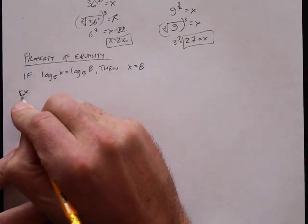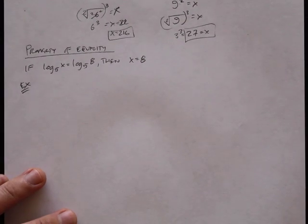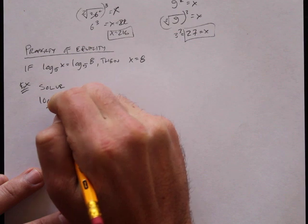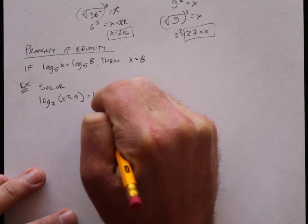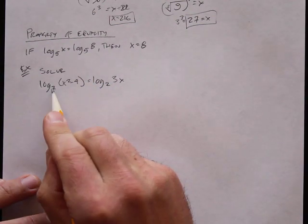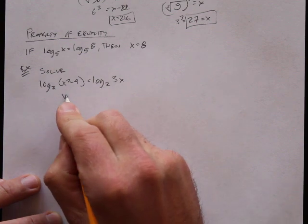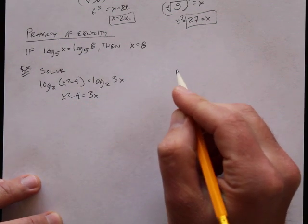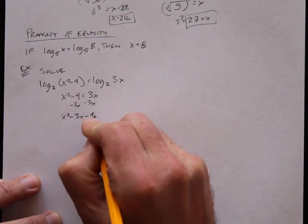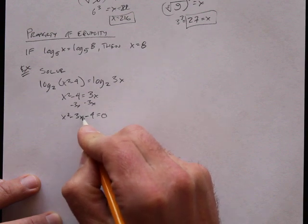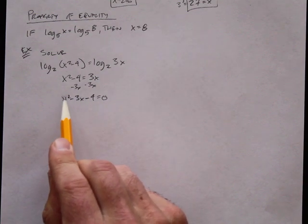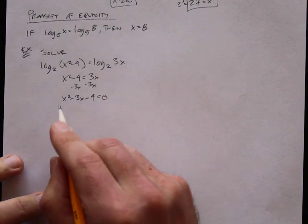Let's do an example: log base 2 of x squared minus 4 equals log base 2 of 3x. I've got log base 2 and log base 2, so I can just ignore those and say x squared minus 4 equals 3x. I'm going to subtract 3x from each side, giving me x squared minus 3x minus 4 equals 0. I can factor this.